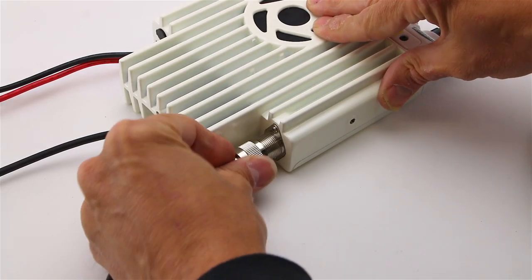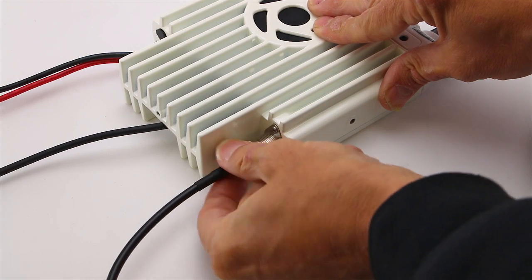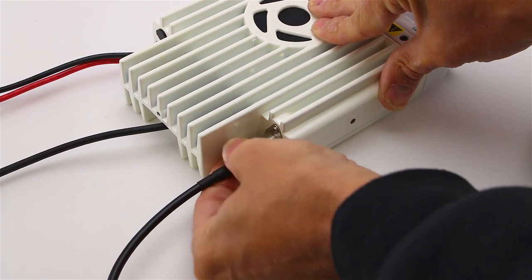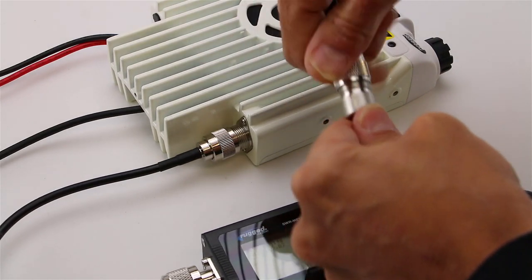To begin, connect one end of the SWR meter to the antenna port on the back of your radio. Connect the antenna you just unscrewed to the other side of the meter.